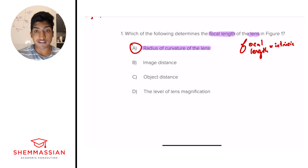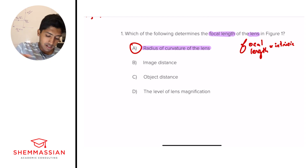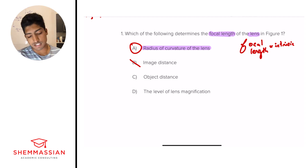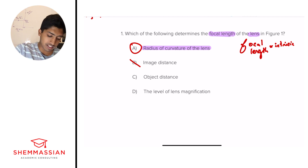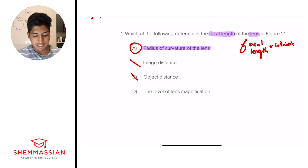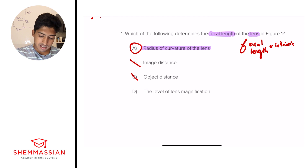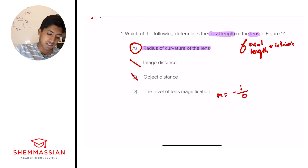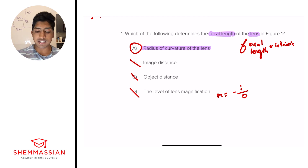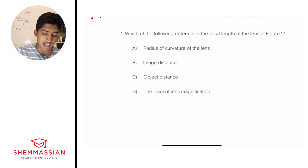B, the image distance — while affected by the lens, it's also affected by object distance, so it does not determine focal length. C, object distance — this does not affect focal length; it's actually independent of focal length. D, magnification — magnification equals negative image distance over object distance, so it's dependent on both image and object distance, neither of which solely determines focal length. So we're one for one just from prior knowledge.